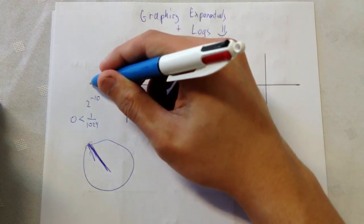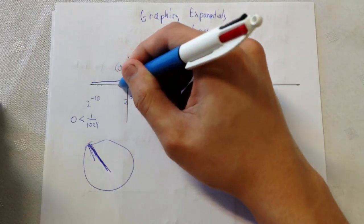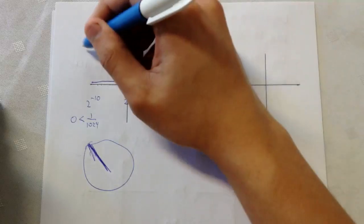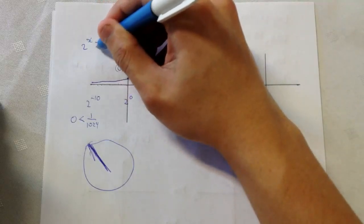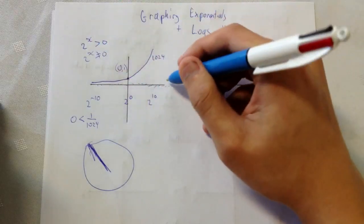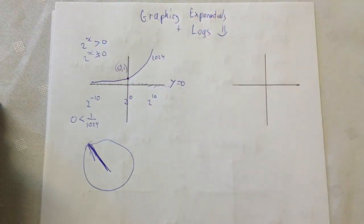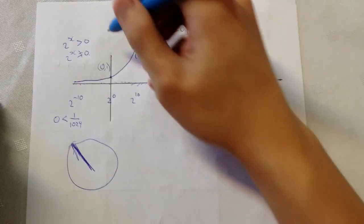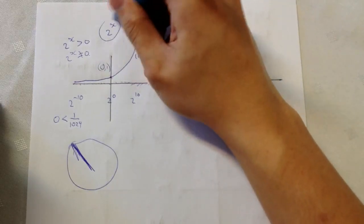And that's why, and this is actually the asymptote. Because 2 to the x is always greater than 0. Or 2 to the x does never equal 0. So the asymptote here is y equals 0. Okay? So that's 2 to the x. It's our graph of our exponential.